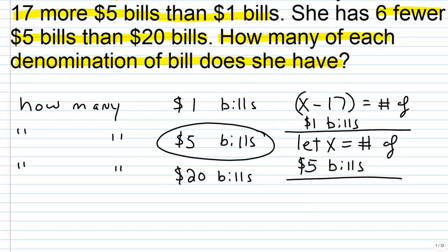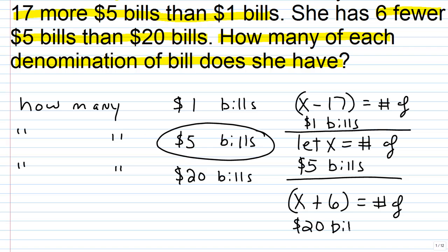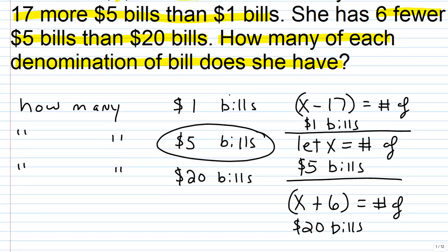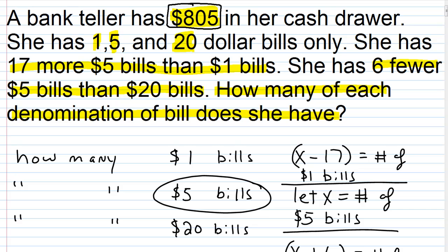Now the next comparison: she has six fewer $5 bills than $20 bills. The amount of $20 bills is going to be six more than the number of $5 bills she has. Since the number of $5 bills is X, six more than that is X plus 6 — that's the number of $20 bills. We now have enough to set up an equation, because the $805 tells us the total amount of all the bills combined.